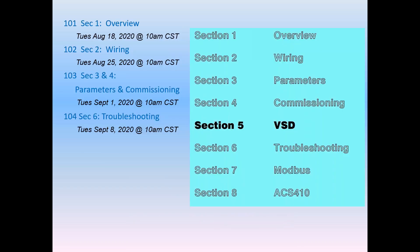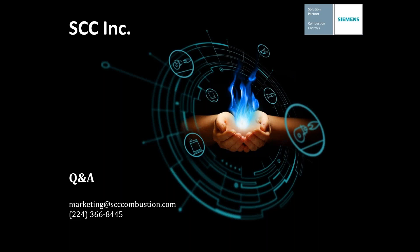This completes how to read the fault code history. And it also completes the webinar today on troubleshooting the LMV3. Once you get the fault code, all you got to do is look it up and you got the solution in chapter six. Next week, we're going to do VFD and PWM. And we're going to complete the thing with section seven and eight, which is the Modbus and the ACS 410 software. We'll take questions and answers. Steve, I'll turn it back to you.